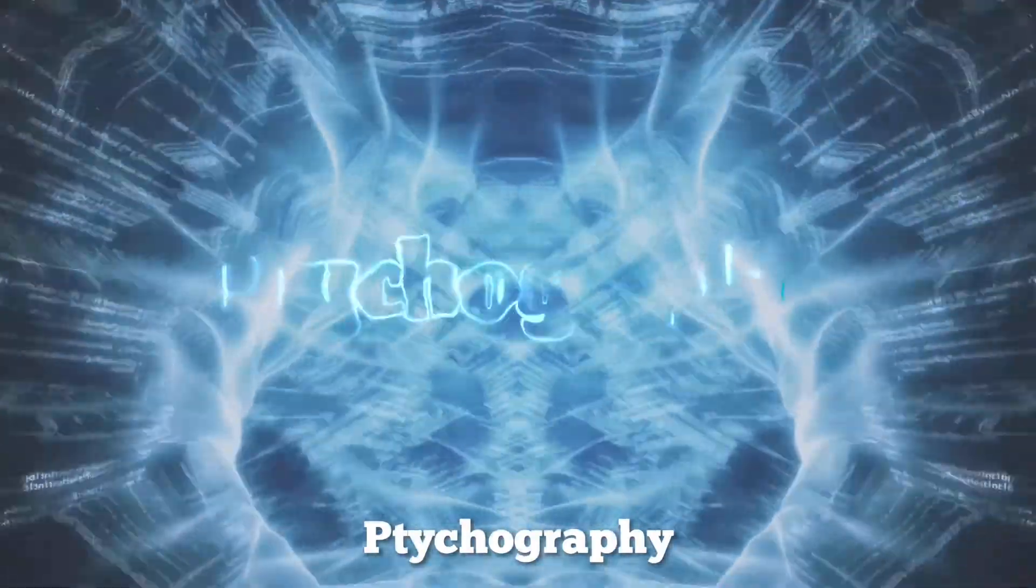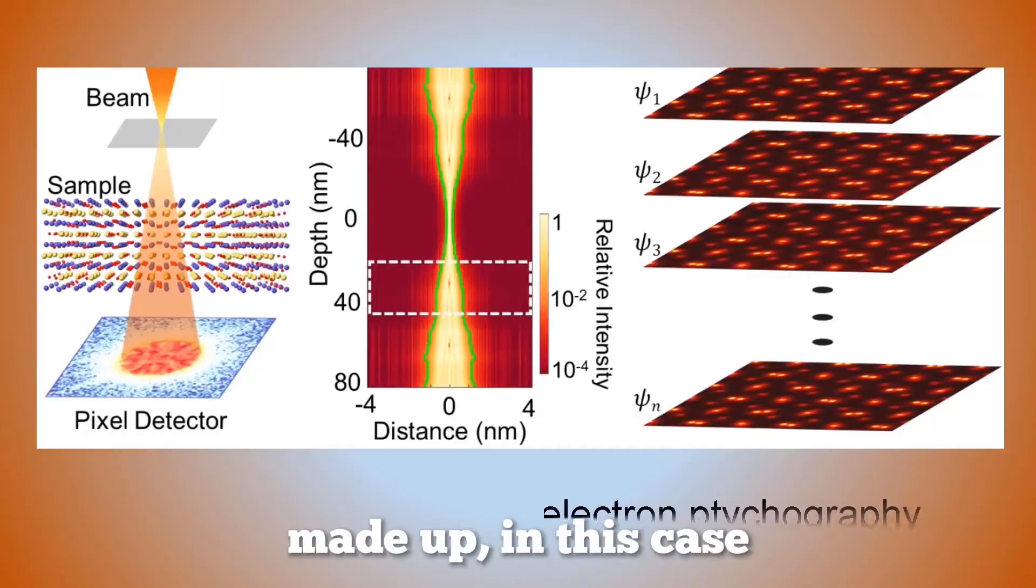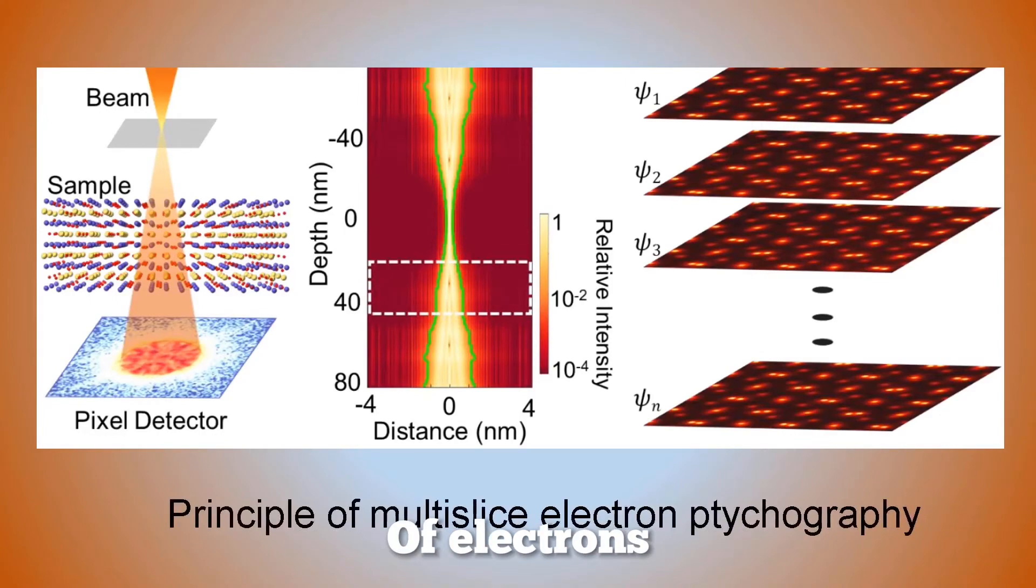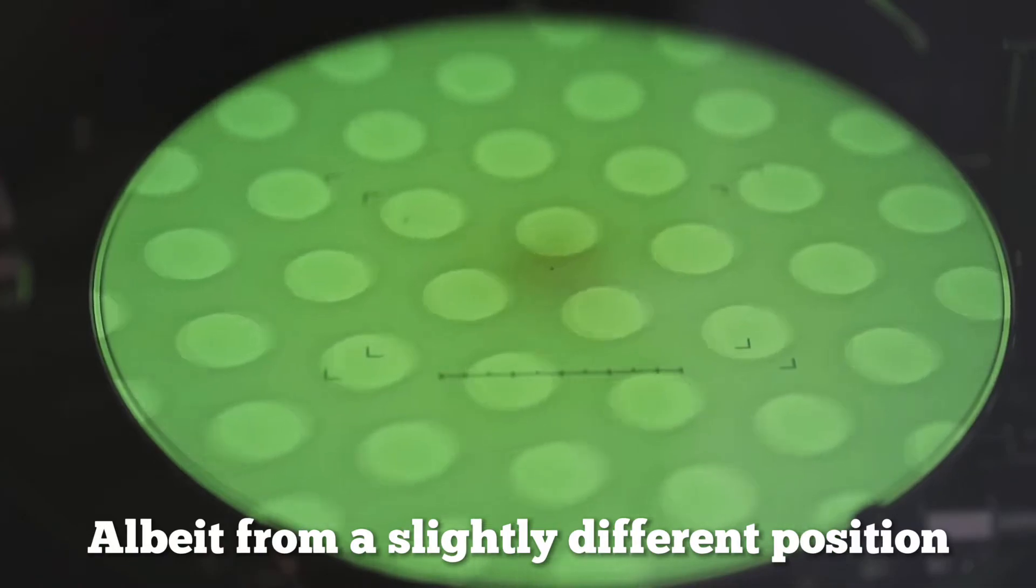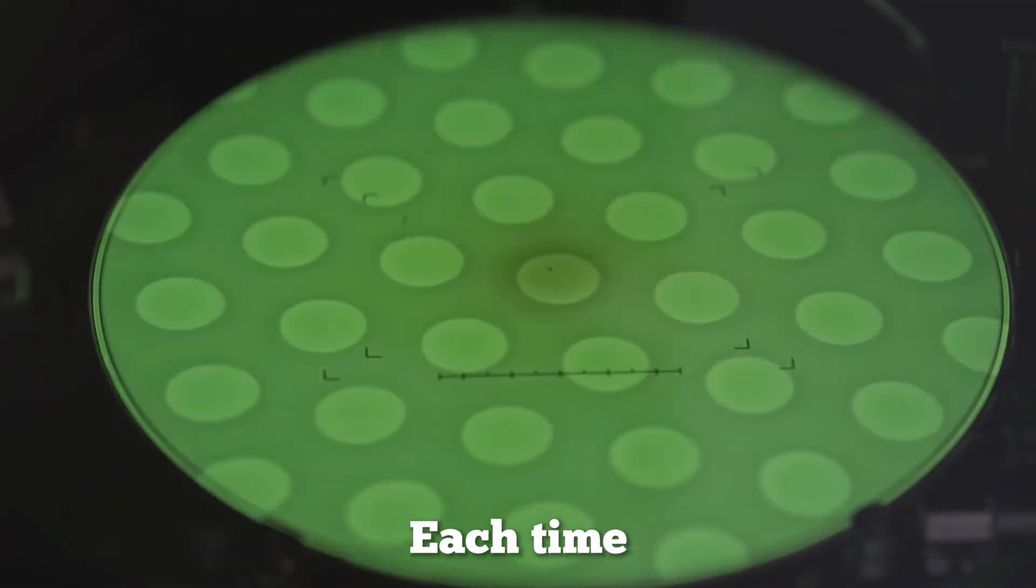The imaging method used by the team involves a technique called ptychography, in which a beam made up, in this case, of electrons, is repeatedly fired through an object of interest, albeit from a slightly different position each time.